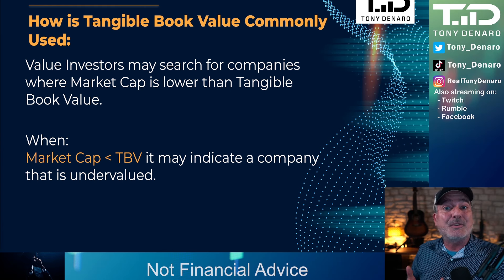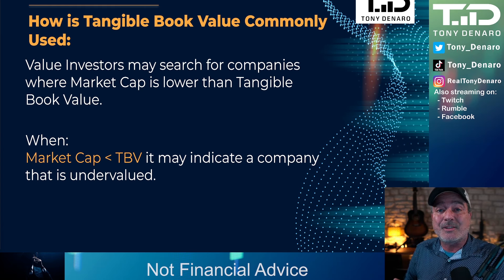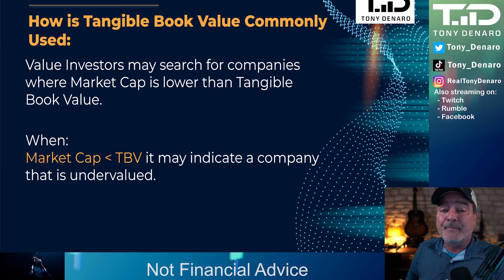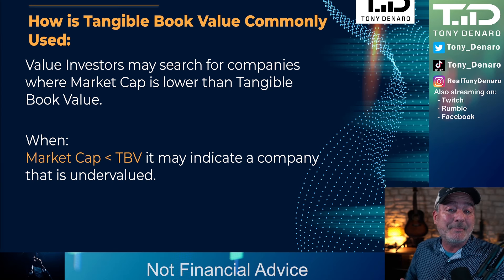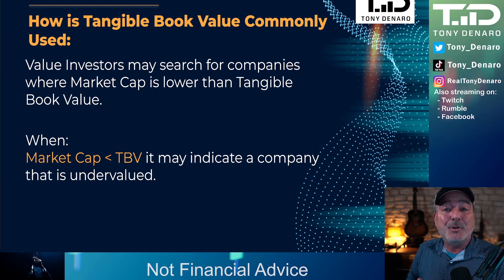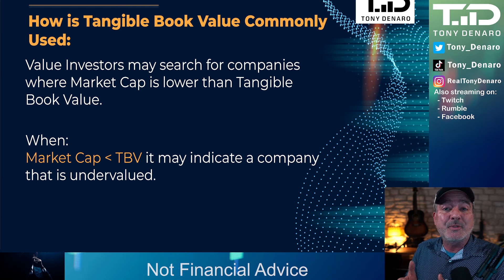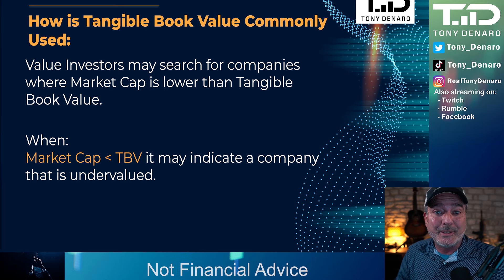If we find a company where the market cap is lower than the book value, maybe we have an undervalued company others haven't discovered yet. If the market cap is greater than the book value, then focus on more important things: return on assets, return on equity, return on invested capital, price to earnings, or a discounted cash flow model. When the market cap is higher than the book value, those are much more appropriate valuation metrics.